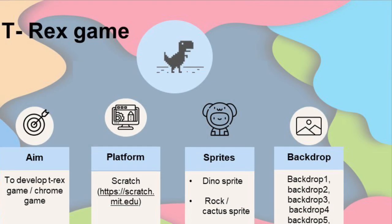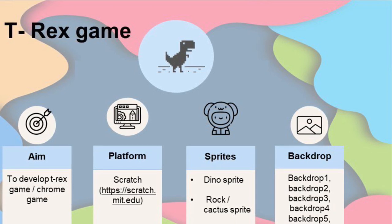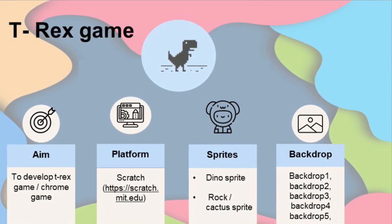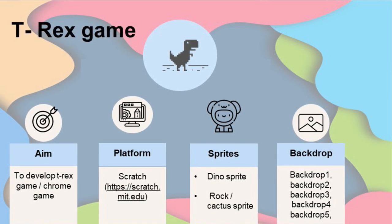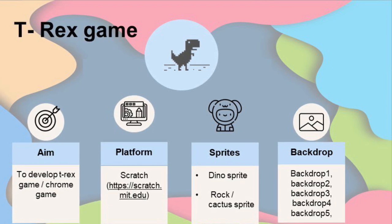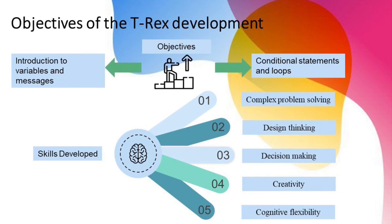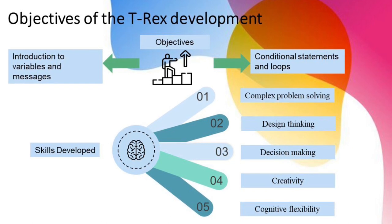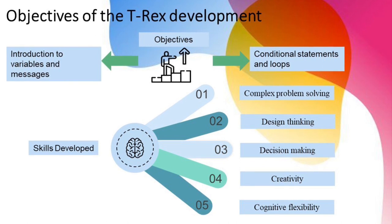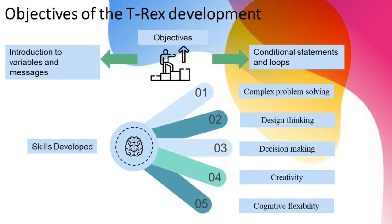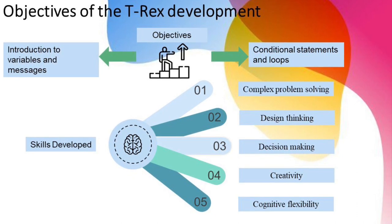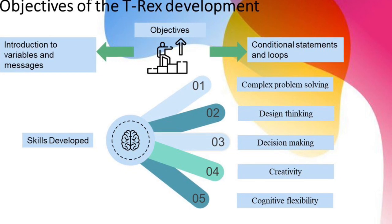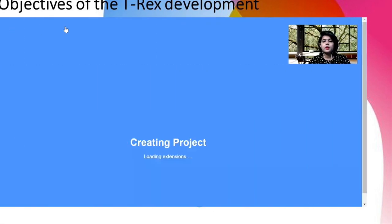In this project we are going to develop a T-Rex game or Chrome game on the Scratch platform. We need two sprites: one is the dino sprite and the other is the cactus sprite. In the backdrop we will be making five backdrops. The objectives of this game include learning how to introduce variables and messages, conditional statements, loops, and building complex problem-solving, design thinking, decision making, creativity, and cognitive flexibility.